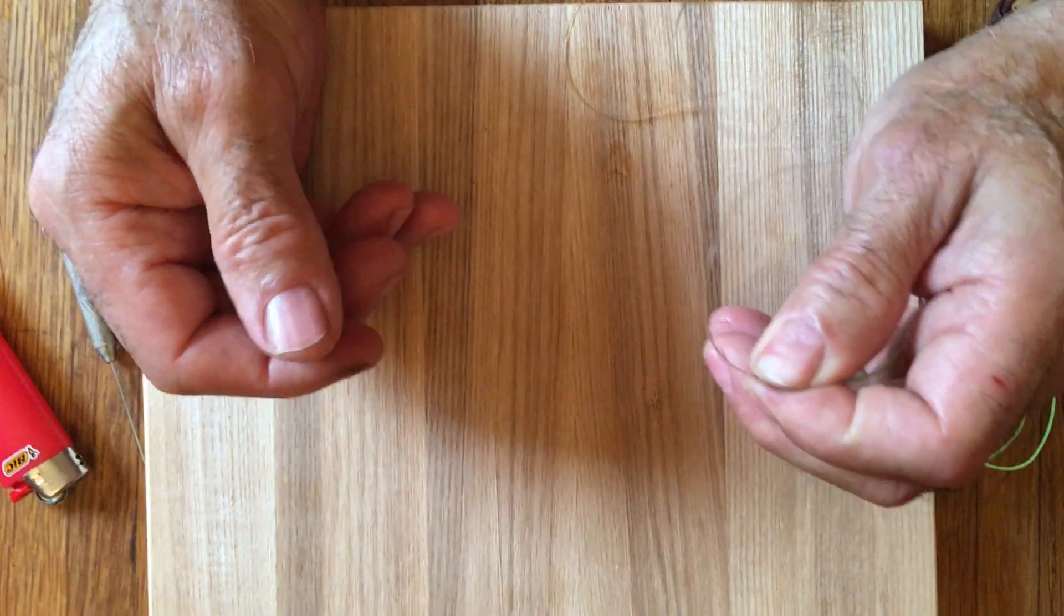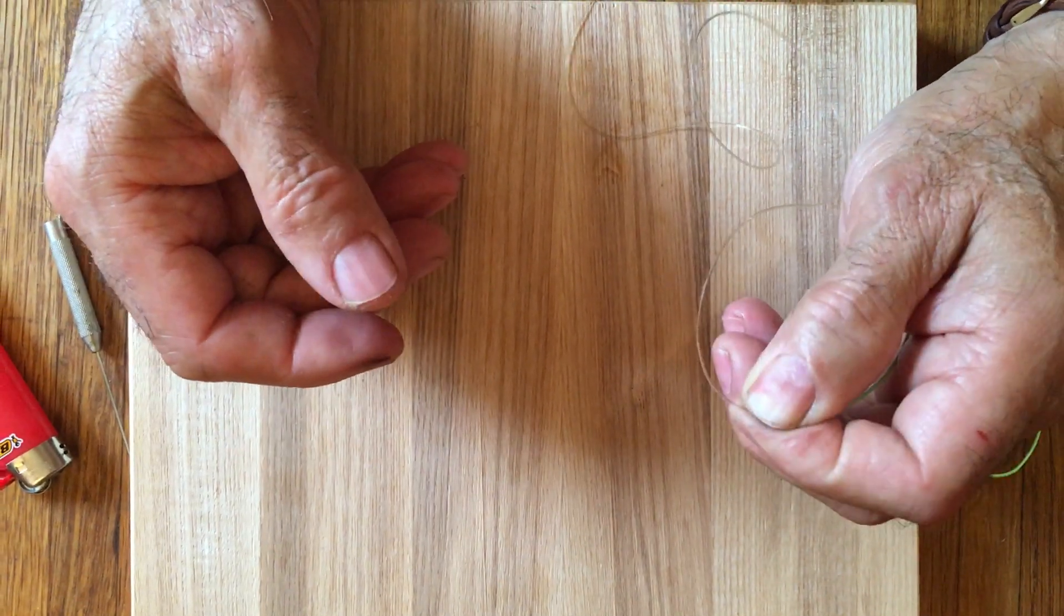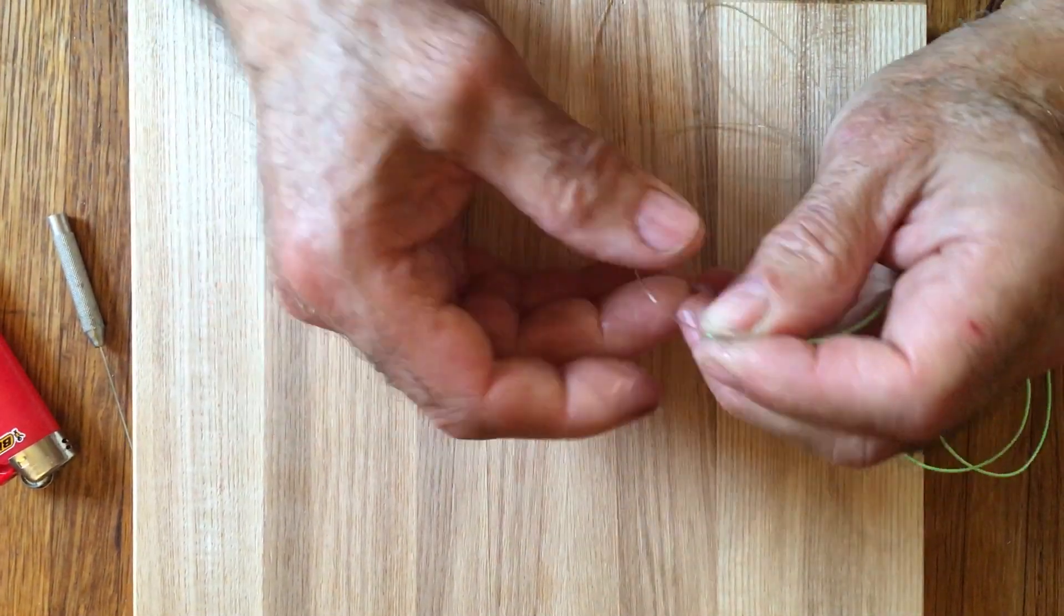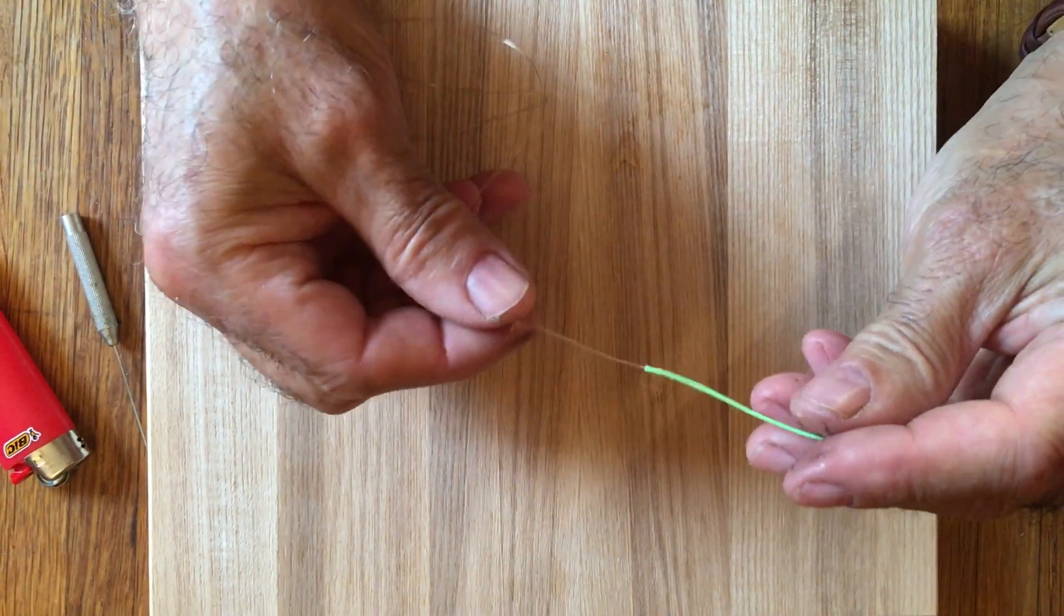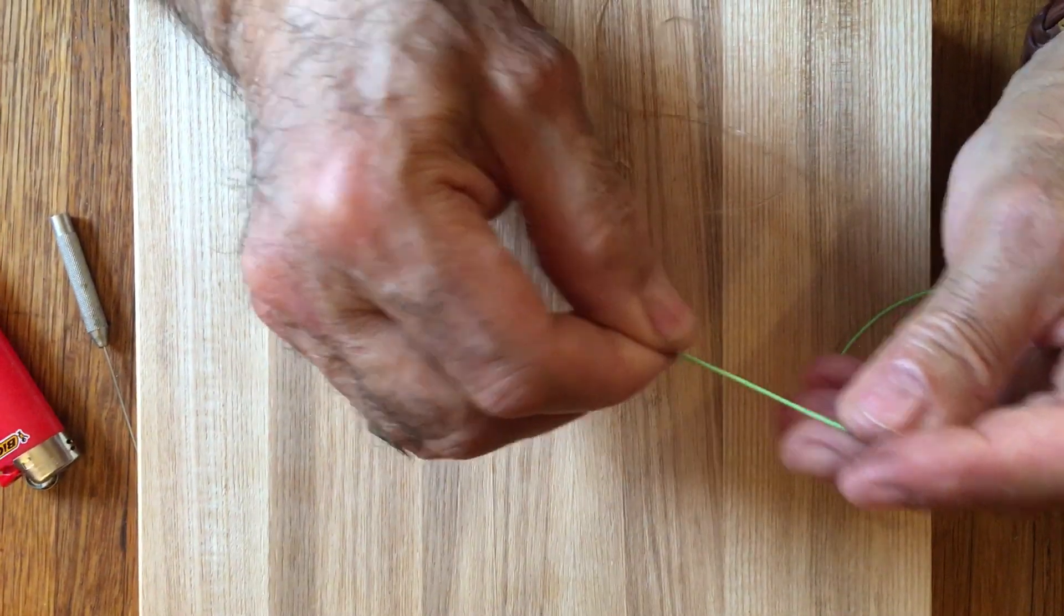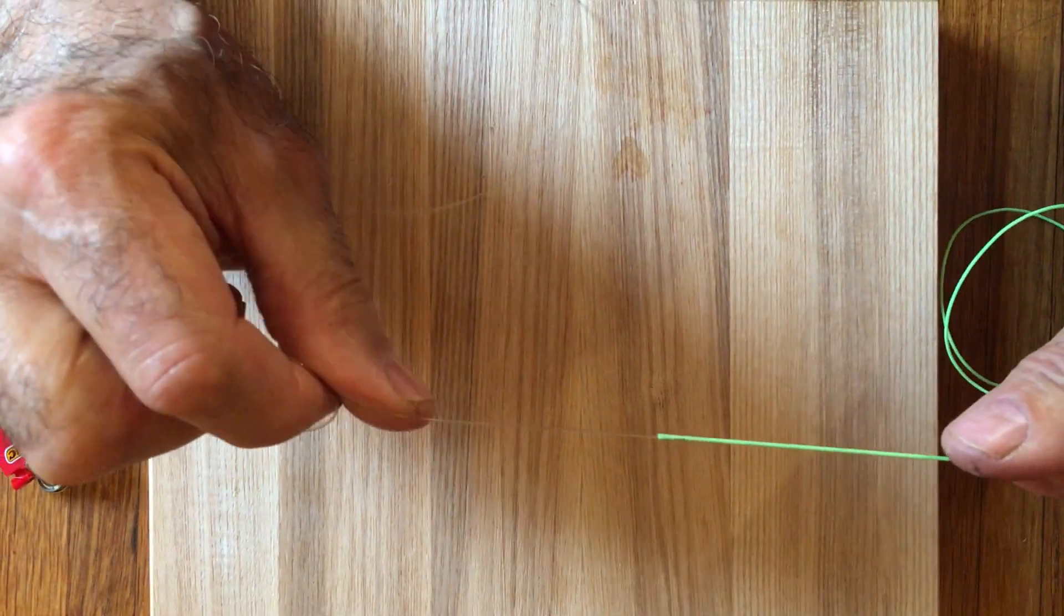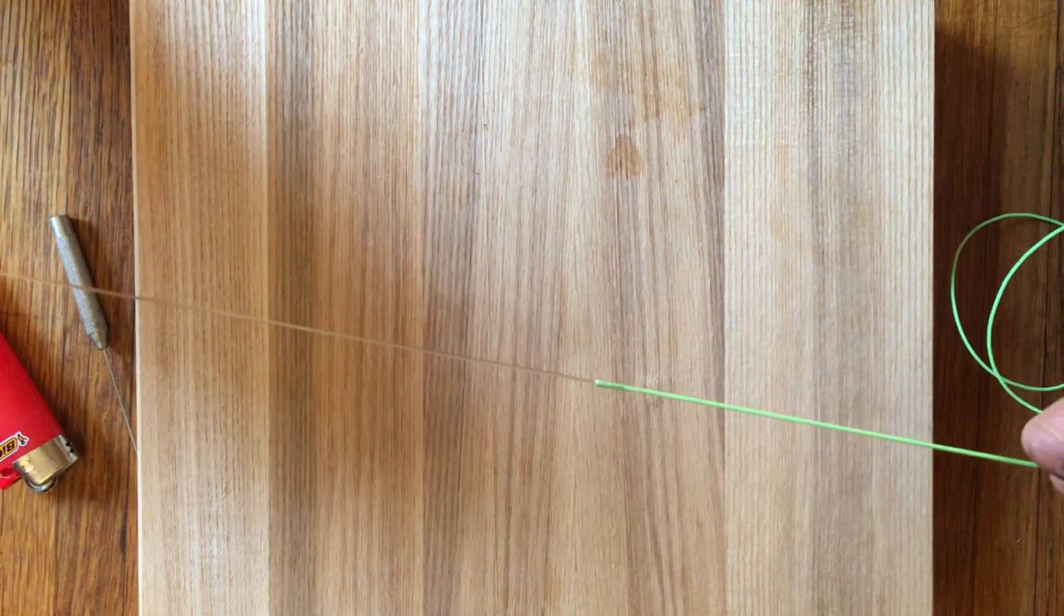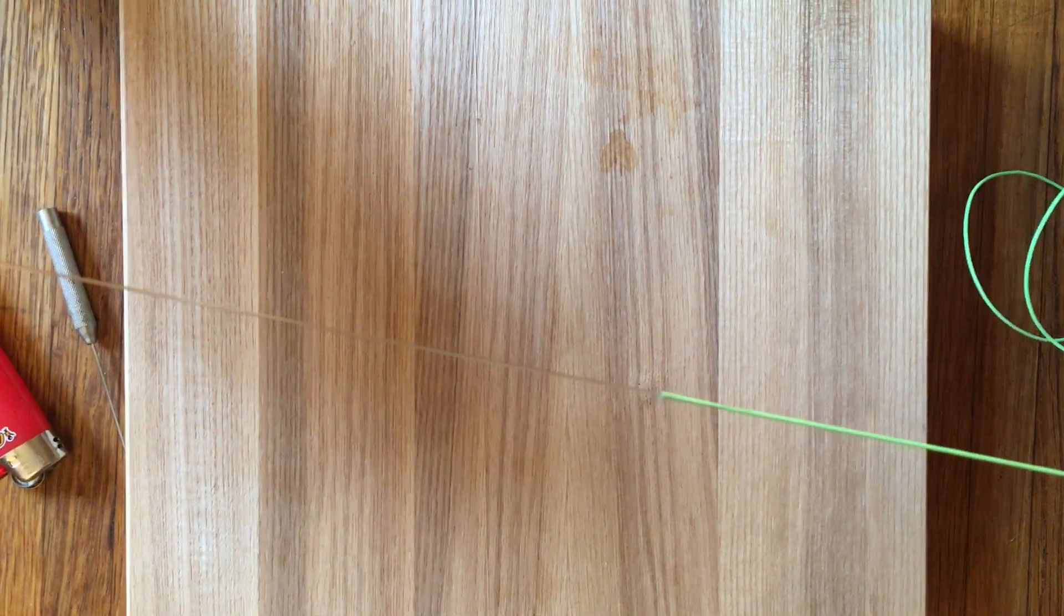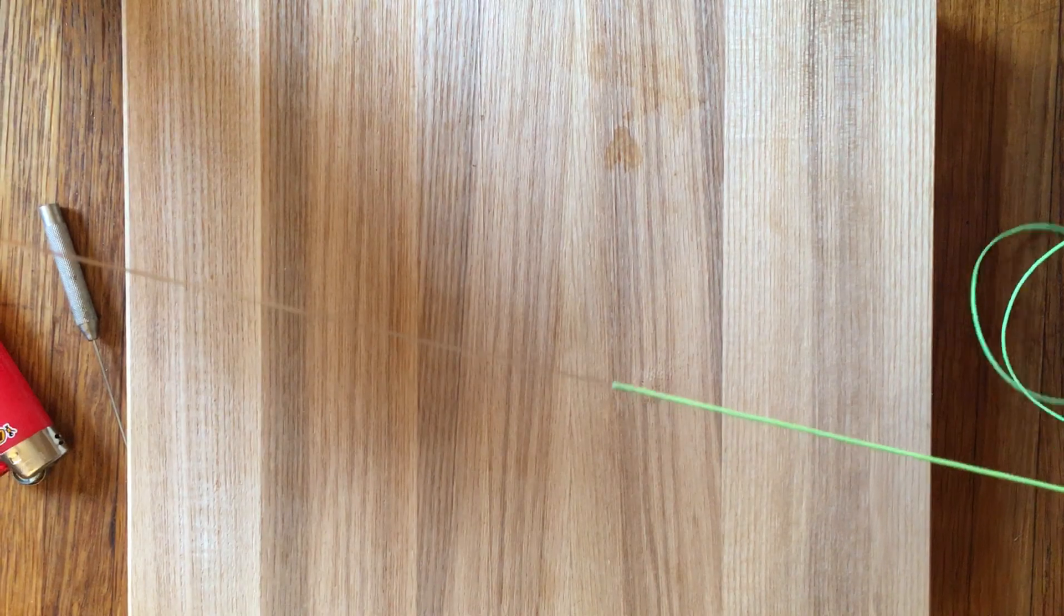You hold it for a little bit to let the glue cure and then here you have a very strong joint that is slick enough to go through your guides.